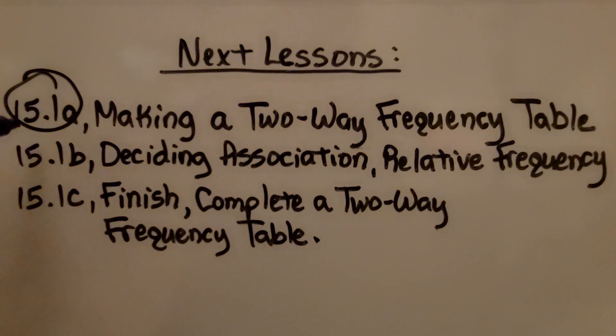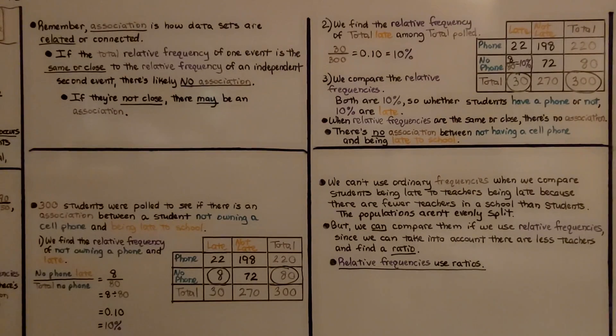Okay, we've finished deciding association, and I've added an additional lesson to 15.1, which is 15.1c. We're going to complete a two-way frequency table. Now, before I go, I want to explain one more thing.